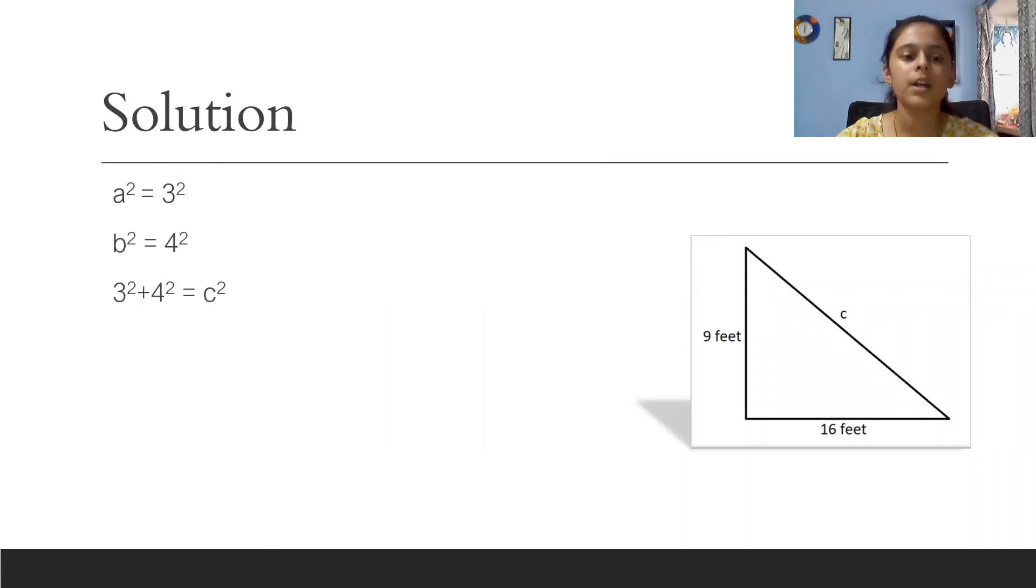So three square plus four square equals c square. Nine plus 16 equals c square. 25 equals c square. So the square root of 25 is five. C equals five feet.